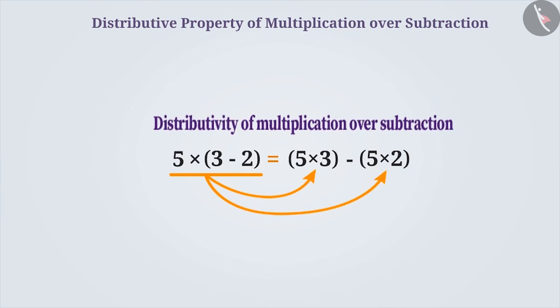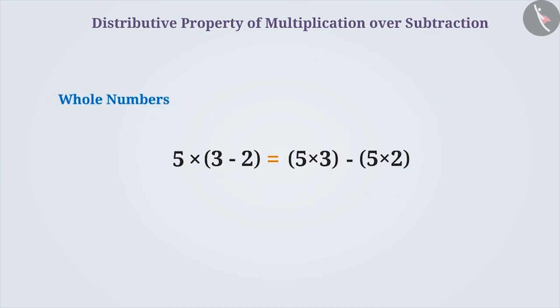This shows that for any three whole numbers a, b and c, a into b minus c can be distributed as a into b minus a into c. This is called the distributive property of multiplication over subtraction.